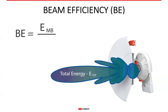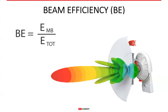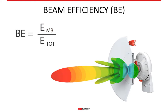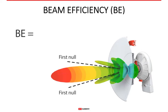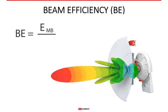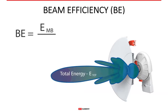In other words, beam efficiency tells us what part of the radiated energy is going into the main lobe. If we know what part of the energy is in the main lobe, the rest must be in the side lobes, because any lobe outside the main lobe is a side lobe. The maximum value of beam efficiency is 100%, which is the ideal situation. The smaller the beam efficiency, the more side lobes an antenna has, and WISPs should avoid antennas with low beam efficiency at all costs.